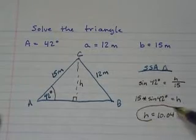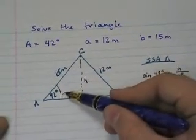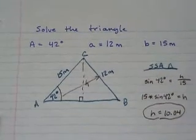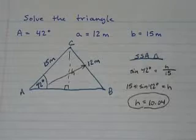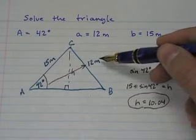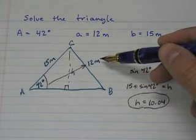Now, you're always going to want to compare H to the side across from the known angle. And you have three possibilities. This side can be less than H. That means there's no triangle possible.